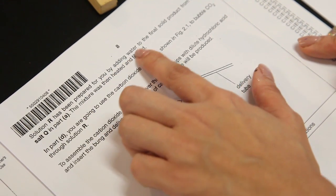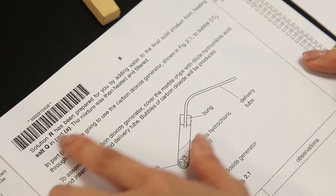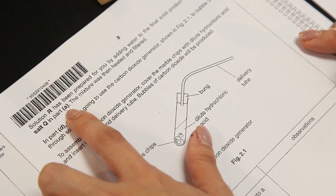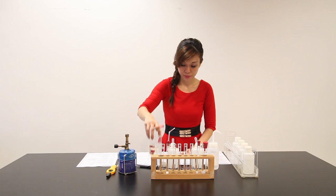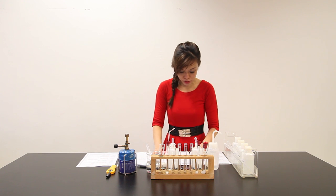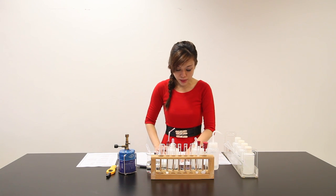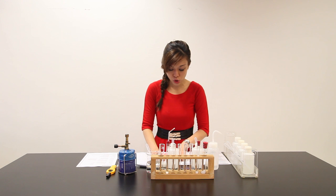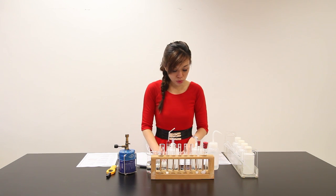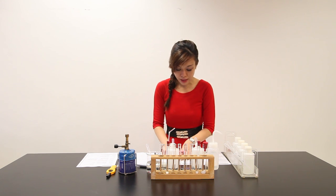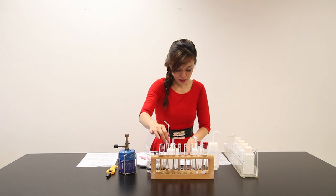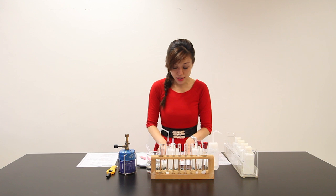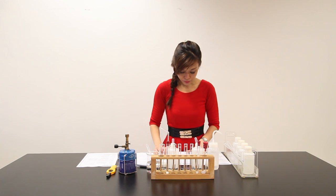They say here, solution R has been prepared for you by adding water to the final solid product from heating salt cube in part A. The mixture was then heated and filtered. So this is actually my solution R. And in part D, which is this portion here, you are going to use a carbon dioxide generator shown in figure 2.1 to bubble CO₂ through solution R. To assemble the carbon dioxide generator, cover the marble chips with dilute hydrochloric acid and insert the bung, which is this one here, with the delivery tube. Bubbles of carbon dioxide will be produced.